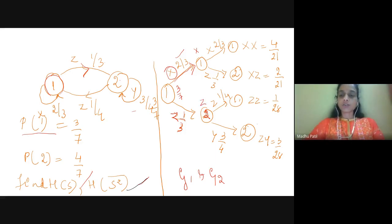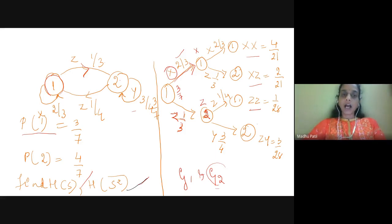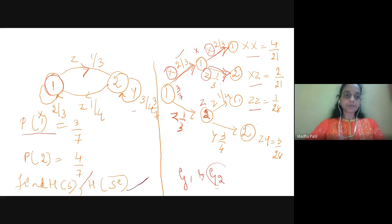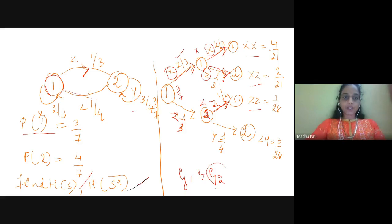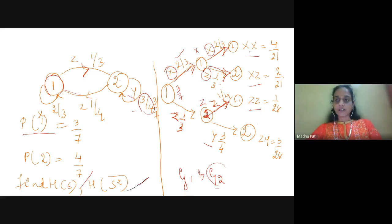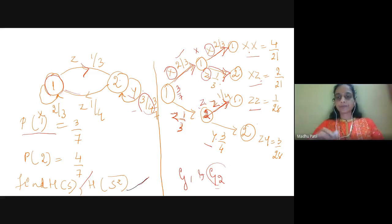To find g2, we extend the tree to the second symbol interval. From state 1, it remains in state 1 or goes to state 2, emitting x and z with probabilities 2/3 and 1/3. When in state 2, it goes to state 1 emitting z with probability 1/4, or remains in state 2 emitting y with probability 3/4. At the end of the second symbol interval, symbols emitted are xx, xz, zz, zy.